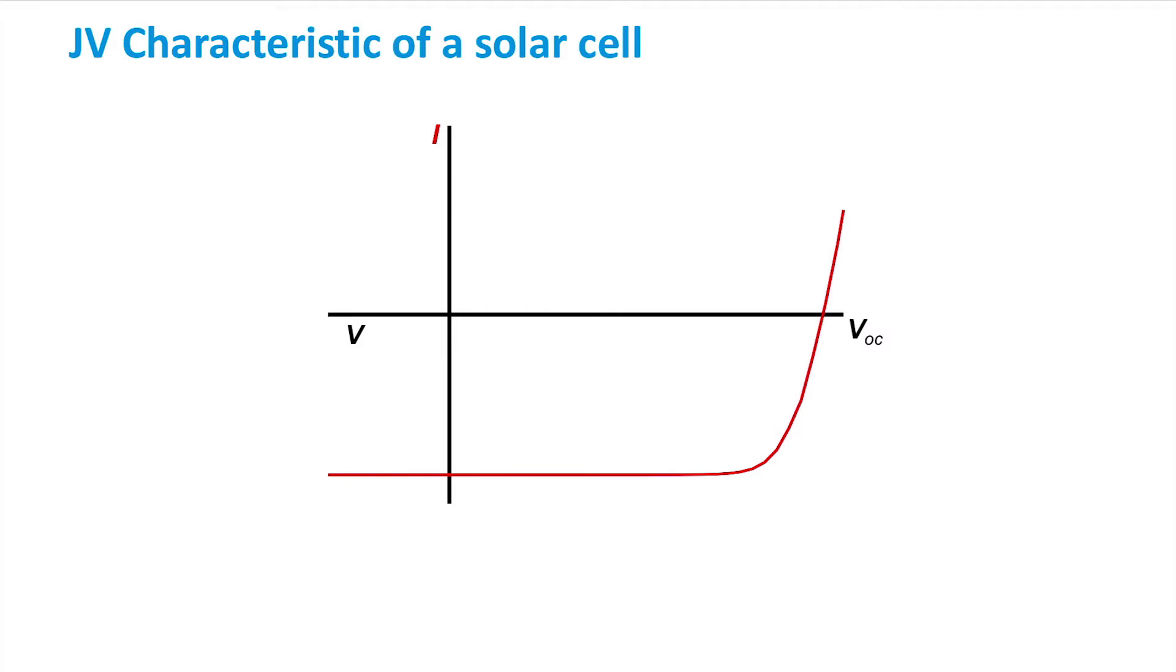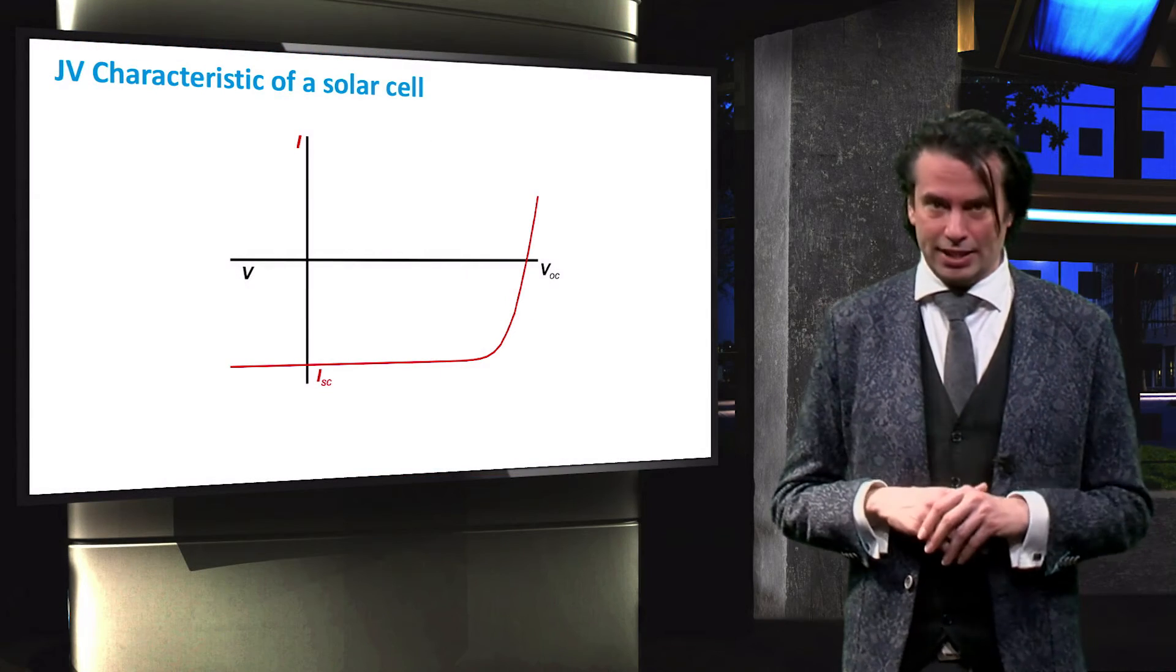Similarly, we can see the crossing of the curve along the y-axis. This point is equivalent to short-circuiting the solar cell as the voltage on either electrode of the solar cell is equal. As such, we call this the short-circuit current, or ISC.